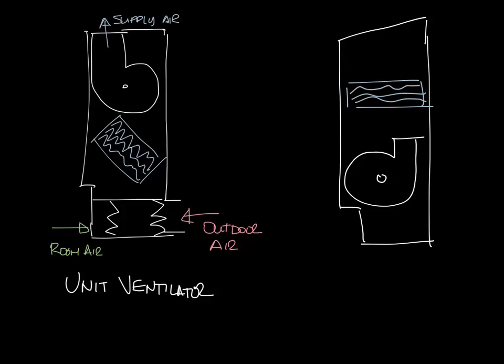So now the room air comes into the front of the fan coil, goes through the blower, through the coil, and then the supply air comes out the top. But you can see there's no outside air inlet on the fan coil.